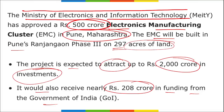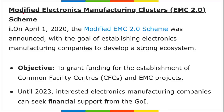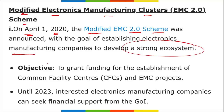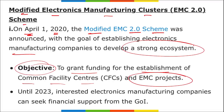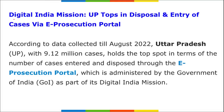Regarding semiconductor policy - the first state to adopt a semiconductor policy was Gujarat. Semi-con India was held in Bangalore. The modified Electronics Manufacturing Cluster scheme EMC 2.0 was announced on 1st April 2020, with the aim of establishing electronic manufacturing companies to develop a strong ecosystem. The objective is to grant funding for common facility centres and EMC projects until 2023.